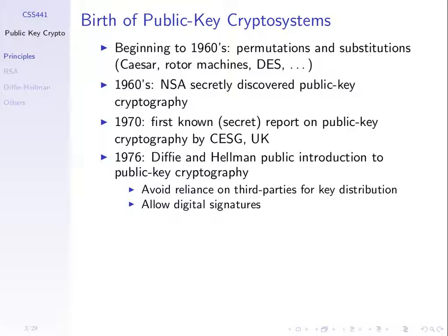Their motivation was that up until then, when symmetric key cryptography was used to exchange a key from A to B, the common approach was to give that key to some trusted third party — like the government or some organization — and they would exchange the key on your behalf. This required trust in other parties. So they wanted to avoid the reliance on third parties and not trust someone else with their key. They developed a technique we refer to as public key cryptography, which we'll see as the Diffie-Hellman algorithm.